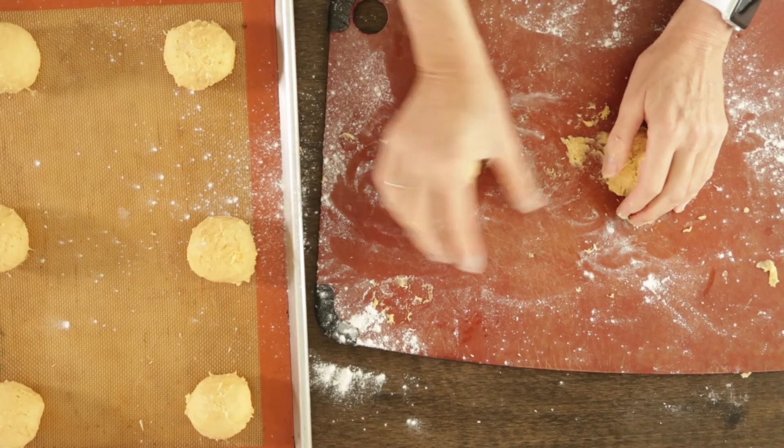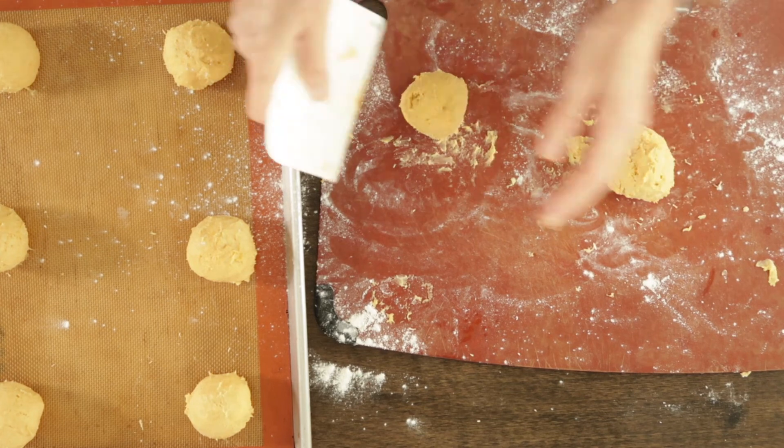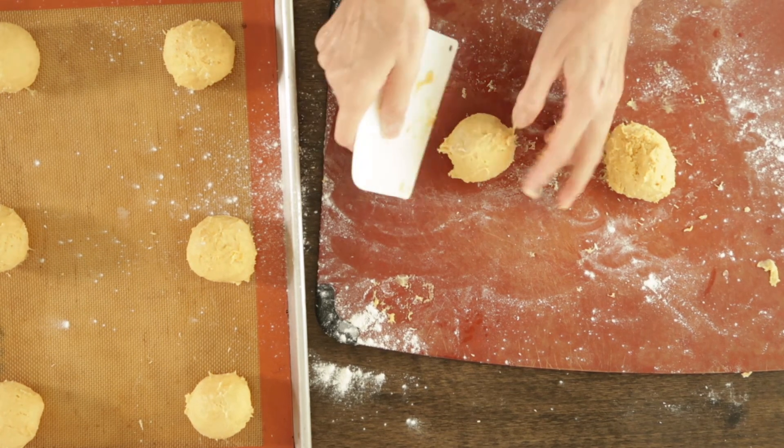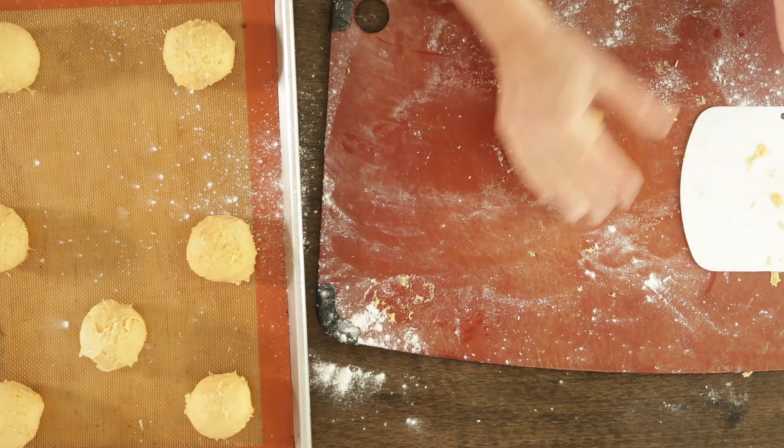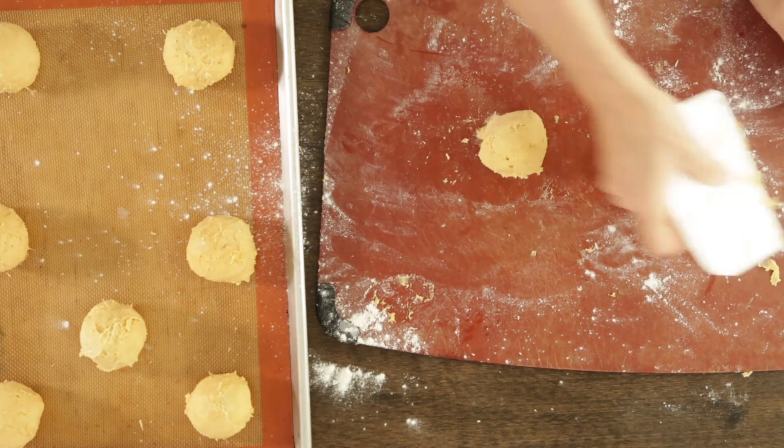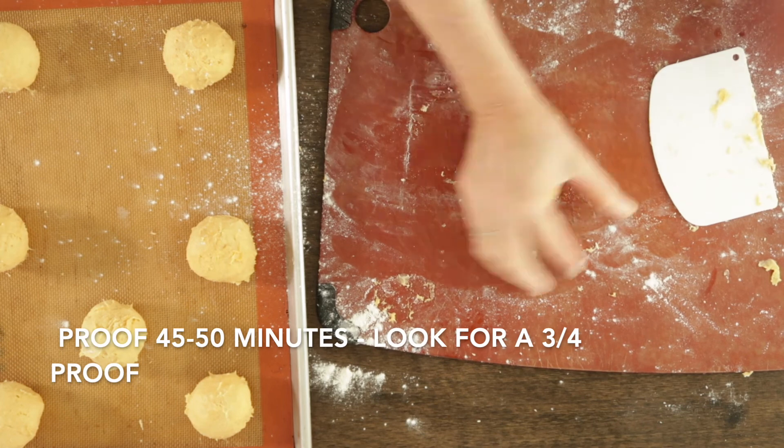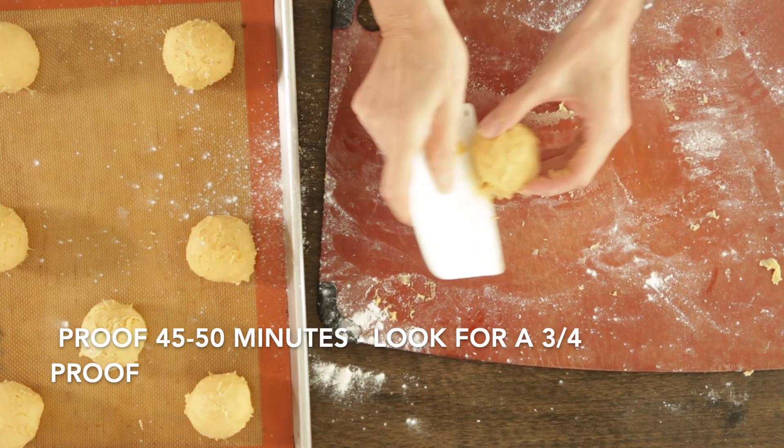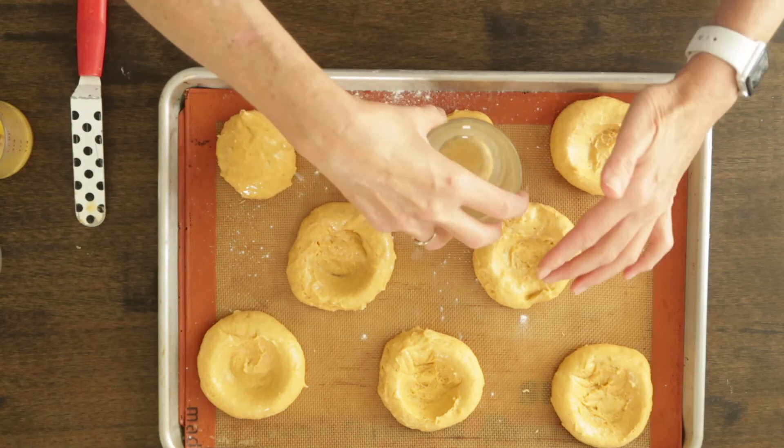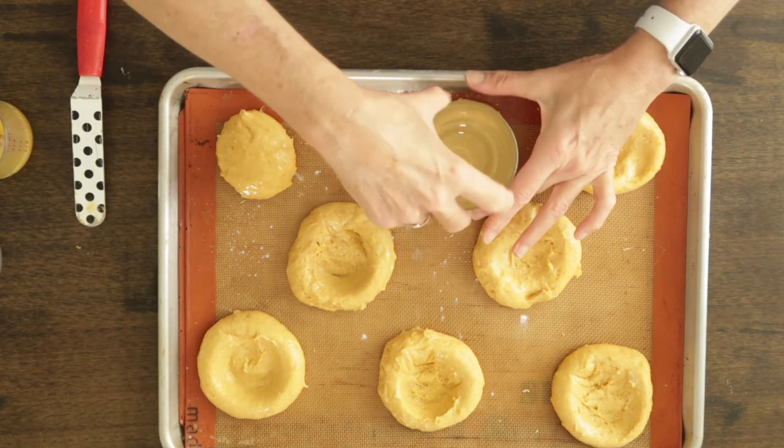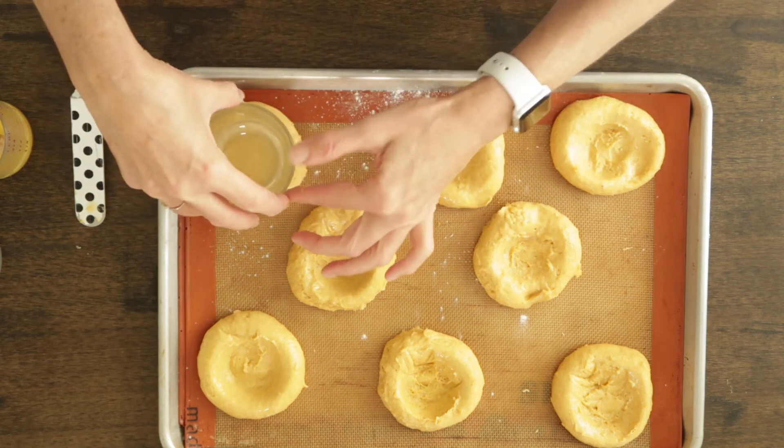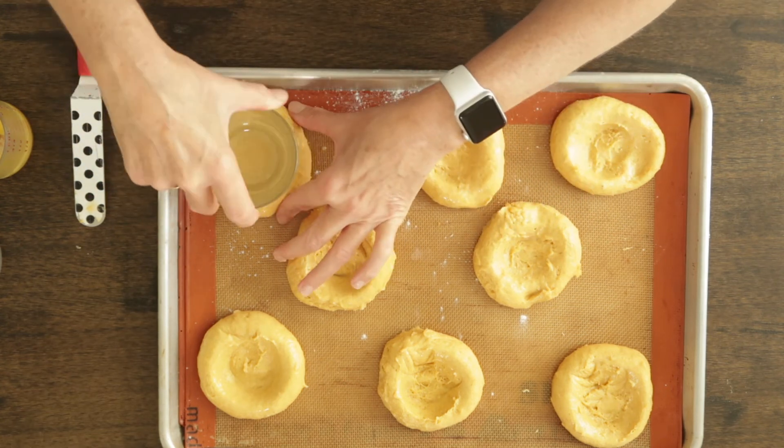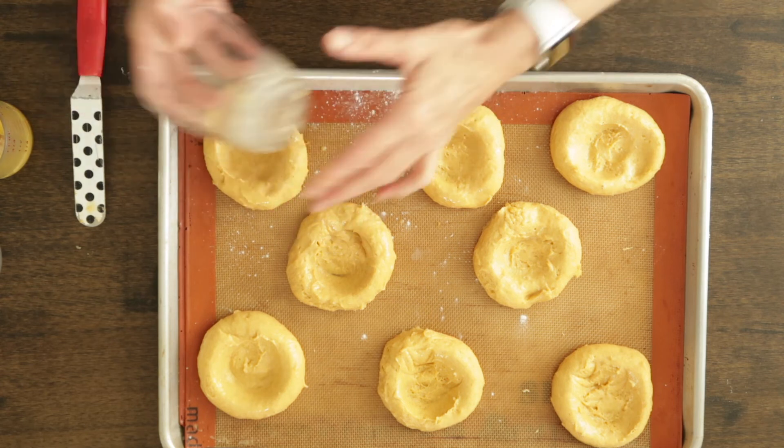Take your cold dough and scale it to 71 gram balls. Then round it the best you can. It will be on the sticky side. You can see I've got a little flour down and I'm using my bowl scraper to loosen any bits that are stuck to the board. Make sure they're spaced out. And then give the whole kolachki a generous coat of egg wash.